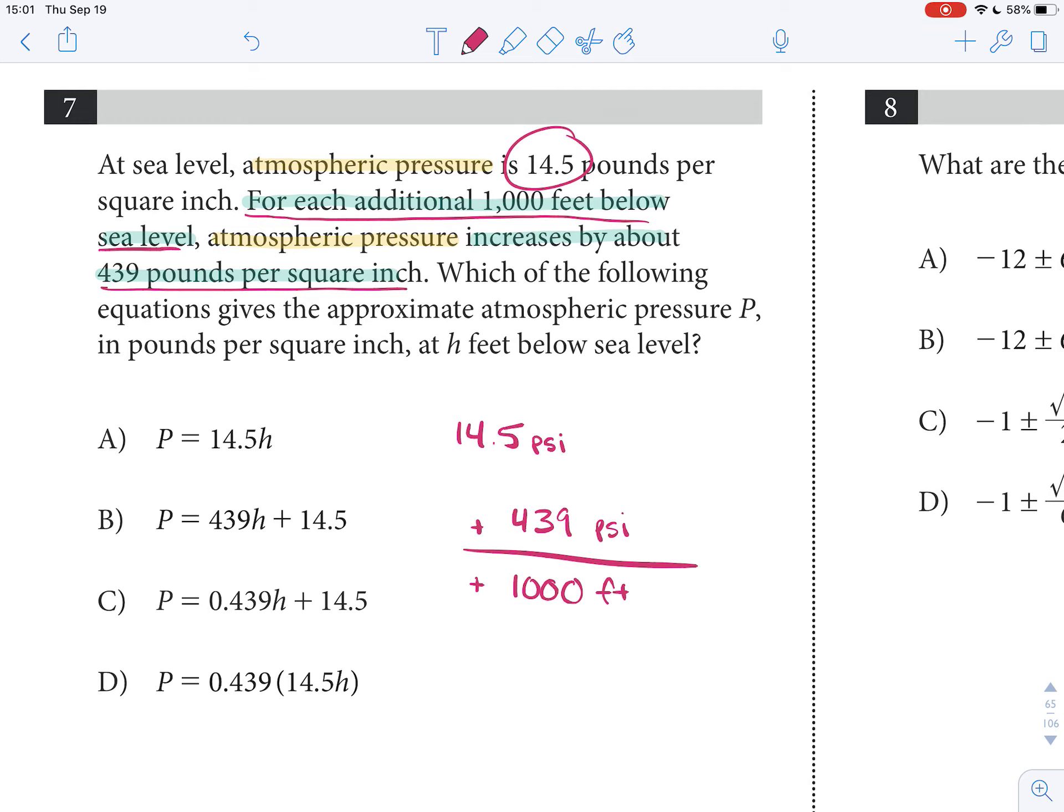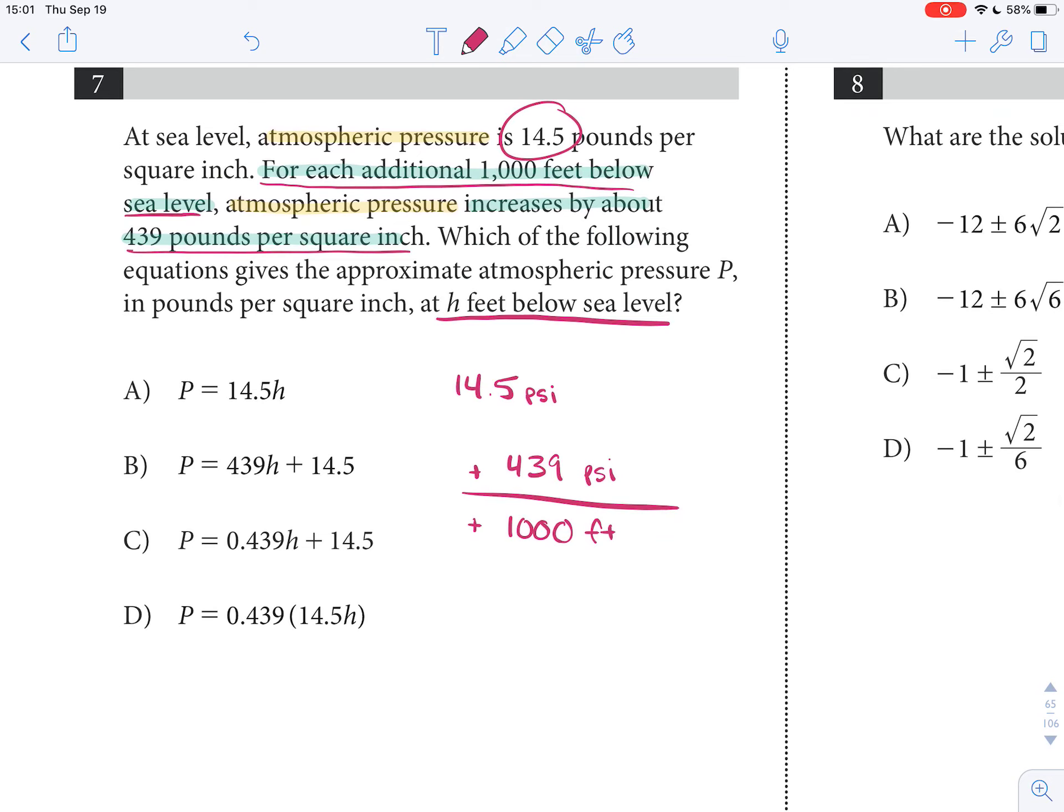So, they tell us here that H feet below sea level, so our equation should end up looking like starting value, 14.5 PSI, plus 439 over 1,000 times H. The reason is times H, because H is in feet. So, if we think of our unit conversion here, feet are going to cancel feet, and then we're left with a unit of PSI.